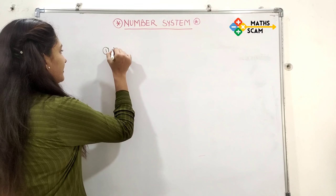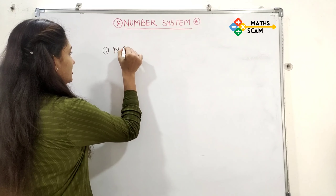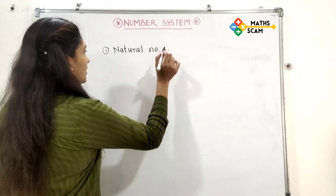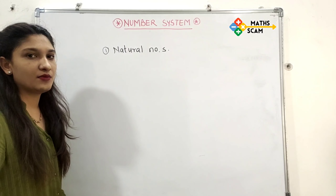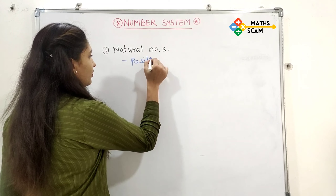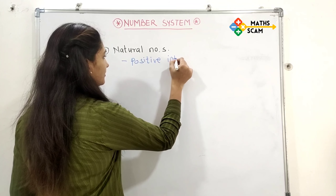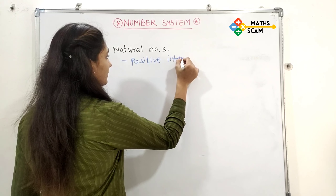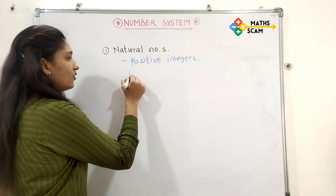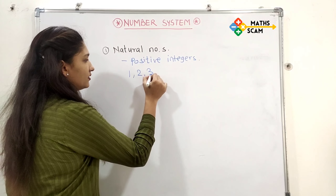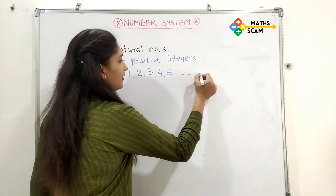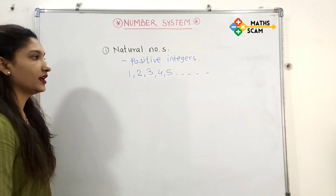First we will see natural numbers. What is a natural number? Natural numbers are positive integers which start with 1, 2, 3, 4, 5 and so on.